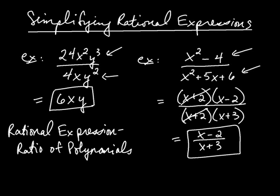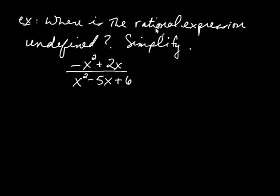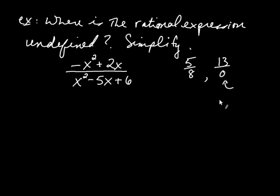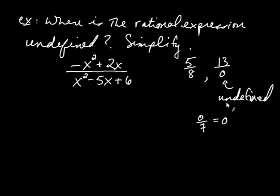That important difference can be seen when we compare rational expressions to basic functions. The question asks: when is the rational expression undefined? Think of a basic fraction like 5 divided by 8 — that fraction is clearly defined because the denominator is not zero. But something like 13 divided by zero would be undefined. So a fraction is undefined whenever the denominator is zero. Note that zero divided by 7 is not undefined — that equals zero. The rule is: the denominator cannot be zero.